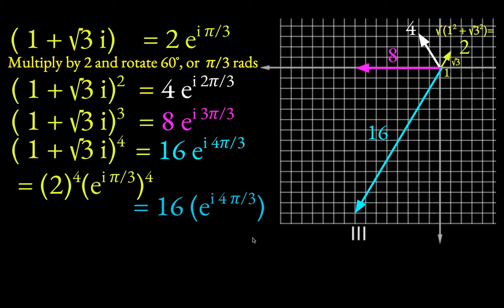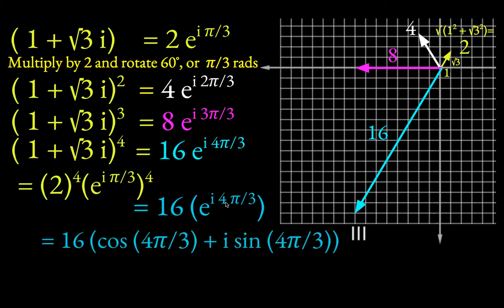So then what we want to do, if, so this would be a possible final answer for what 1 plus root 3i to the fourth is. But if we want to take it back into the so-called a plus bi form, we can just use Euler's identity. So e to the i theta is cosine theta plus i sine theta.